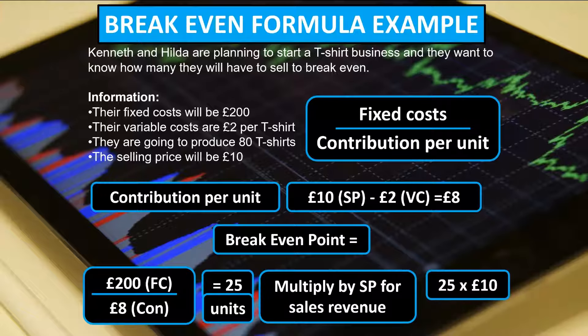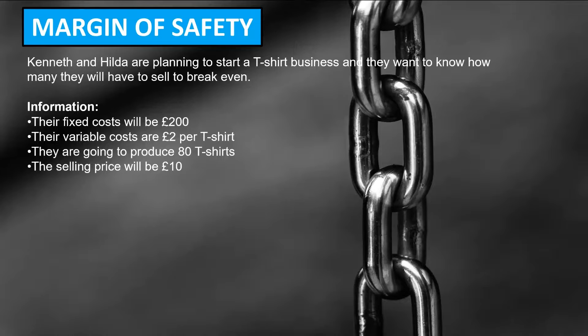Therefore, it is 25 units times the £10 selling price per unit, which provides the information that the business needs to sell £250 worth of t-shirts to breakeven. Now we have our breakeven point, we can move on to calculating the margin of safety.